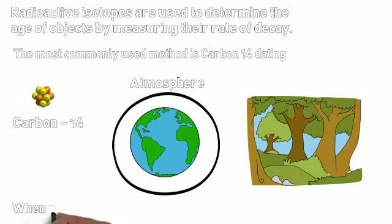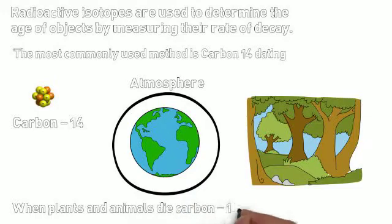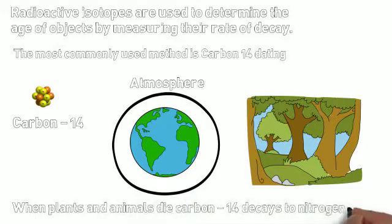And so while those plants and animals are still alive, they're constantly taking in new sources of carbon-14. When they die, though, when the plants and animals die, there's no longer a new source of carbon-14 coming in, so we start to see the decay of carbon-14 becoming nitrogen-14.